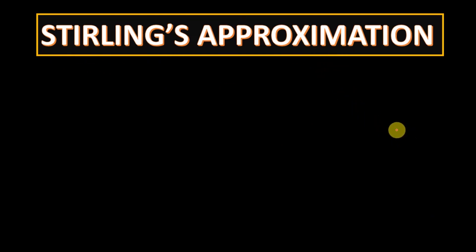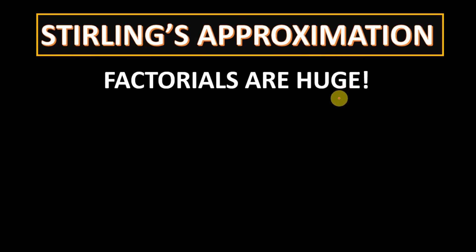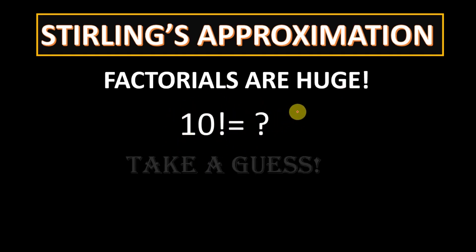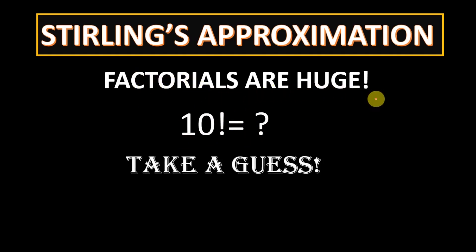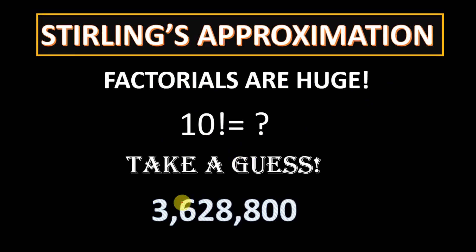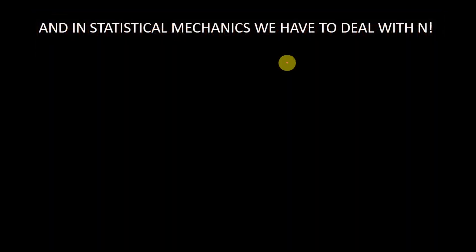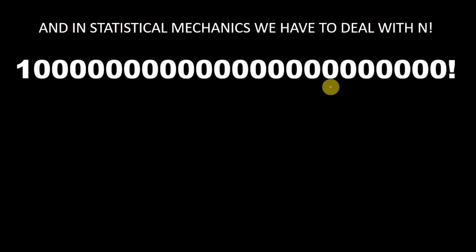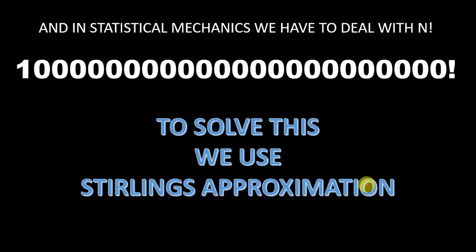The first thing you need to know is that factorials are huge. As an example, take a look at 10 factorial. What do you think will be the value of 10 factorial? Take a guess — multiplying 1, 2, 3 and so on till 10. The answer is around 3.6 million. In statistical mechanics, we have to deal with N factorial, that means 10 raised to the power 23 factorial. Any computer on earth can't handle numbers this big, so to deal with these large numbers, we use Stirling's approximation.